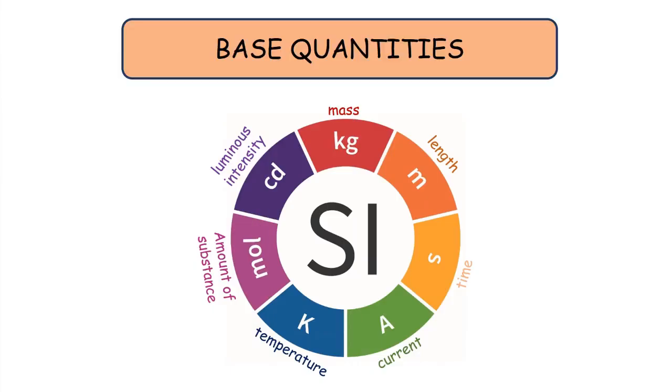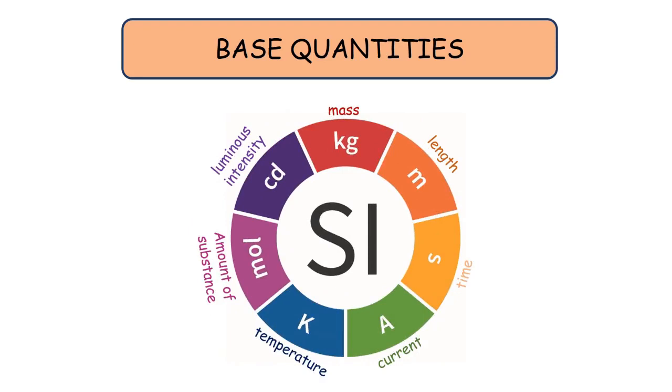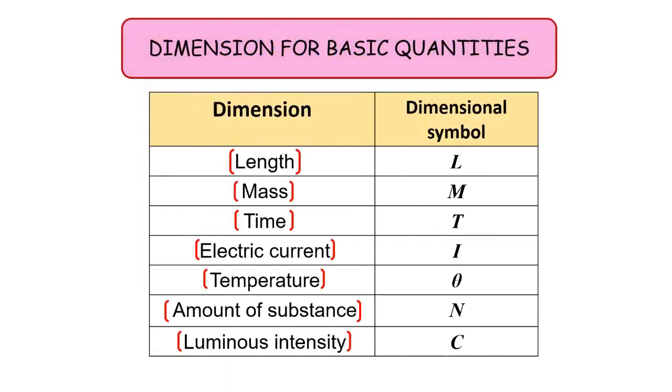Students, do you still remember base quantities and their units? In order to represent dimensions, the seven base quantities are enclosed in square brackets. The dimensional symbol for each of them is denoted as shown in the table.